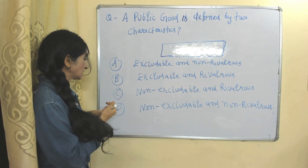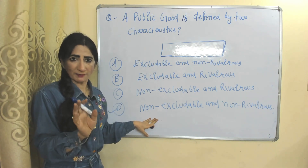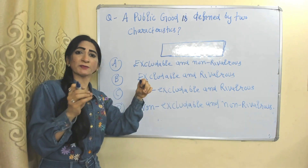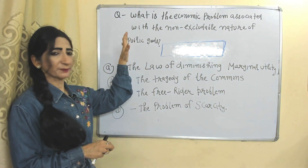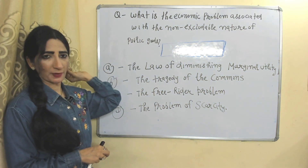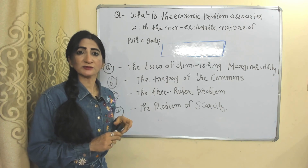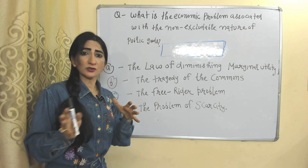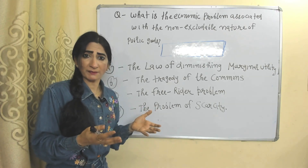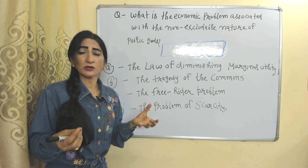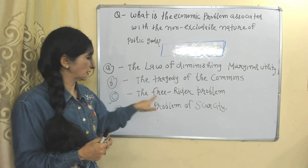Now we will see some basic MCQs. Public goods are defined by two characteristics — the right answer is non-excludable and non-rival. Non-excludable means we cannot exclude any individual from using public goods. Non-rival means the supply of public goods will not be affected no matter how many people are using it. So the right option is A and D. What is the economic problem associated with the non-excludable nature of public goods? The right answer is the free rider problem — meaning people are using public goods without paying any price or contributing to their cost. For example, people visit a public park, make it dirty, without paying any tax, and we cannot exclude them. The right option is C.